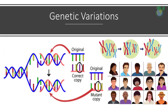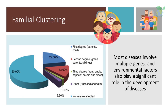Some genetic variations can also affect how a person responds to certain medications or their likelihood of developing a disease. For example, some genetic variations can affect how a person metabolizes certain drugs, making them more or less effective. Similarly, certain genetic variations can increase a person's risk of developing diseases such as cancer, heart disease, and diabetes. Additionally, some diseases tend to cluster in families, known as familial clustering, because many genetic disorders are inherited from parents to their children. However, it is important to note that most diseases involve multiple genes, and environmental factors also play a significant role in the development of disease.